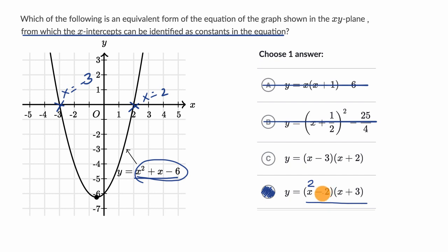the intercepts are actually going to be the opposite, the negatives of these numbers right over here. So this C right over here was a distractor to say, oh, look, I see a negative three and I see a two,